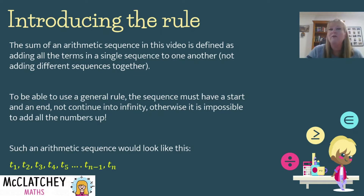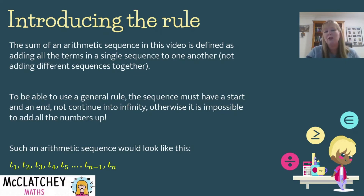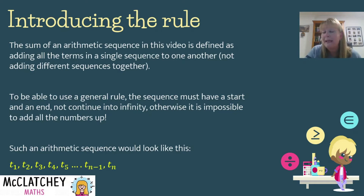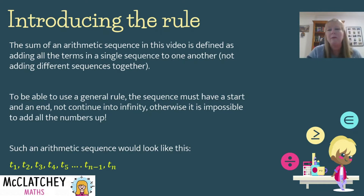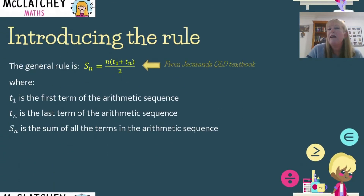In algebraic form, we have term 1, term 2, term 3, and so on, all the way up to our last term, term n. The term before that would be term n minus 1, the term before that would be term n minus 2, and so on.